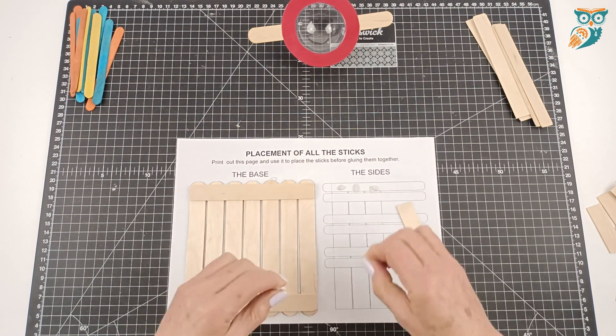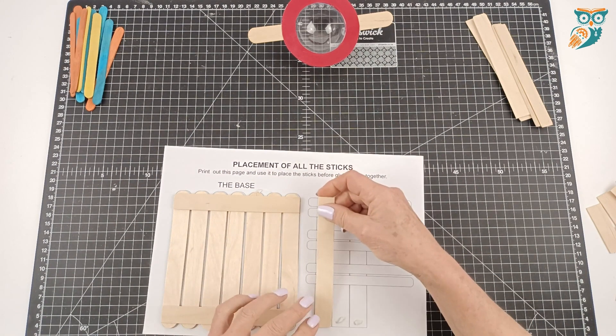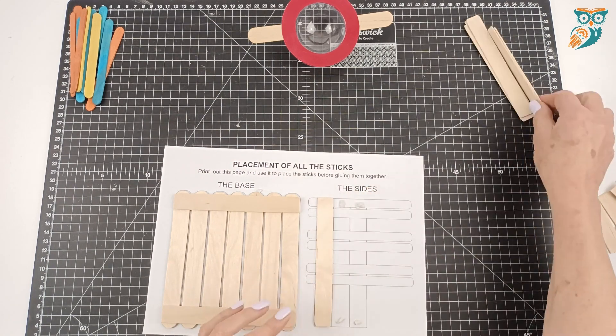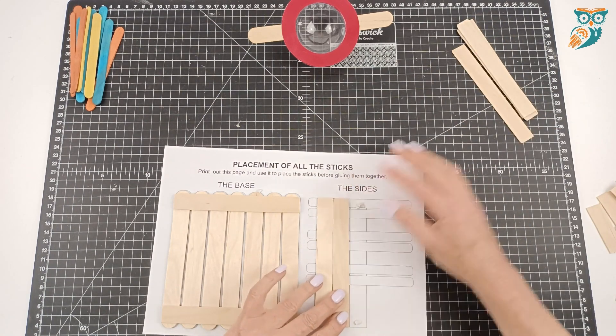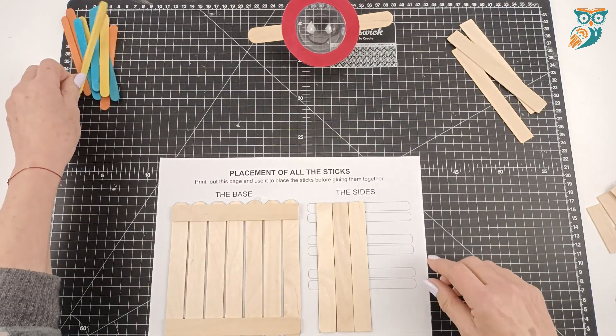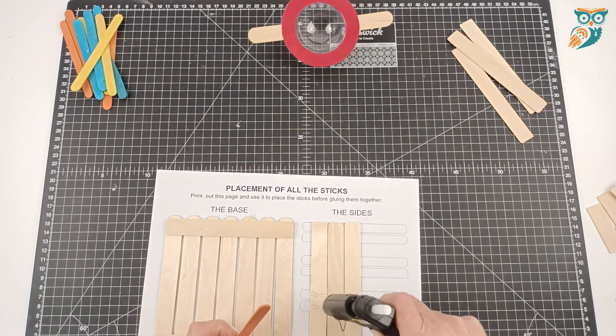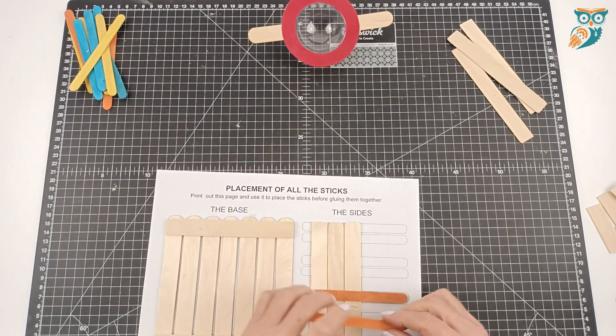Now we're going to build the sides. There is a left side and a right side to this design, so you'll want to make sure that you use both. They are on different pages in the template. And again, we're using that blue tack. It just makes life so much easier.